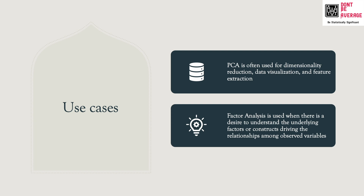In terms of use cases, PCA is often used for dimensionality reduction, data visualization — since it can be very difficult to visualize many variables in a single visual — and also for feature extraction. Factor analysis is used when there's a desire to understand underlying factors: things that couldn't be measured or identified, which can be uncovered using factor analysis.